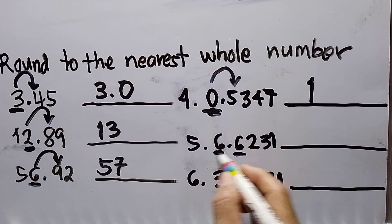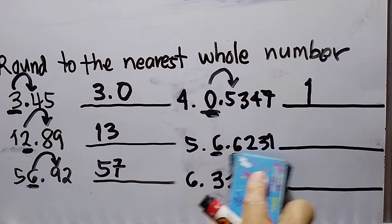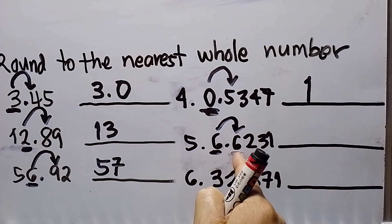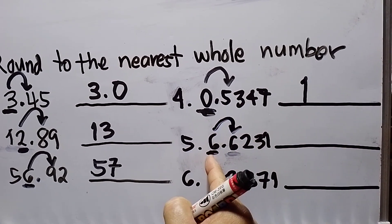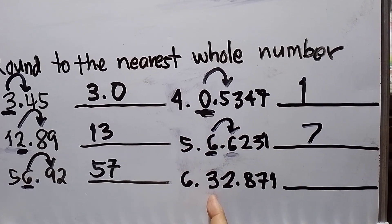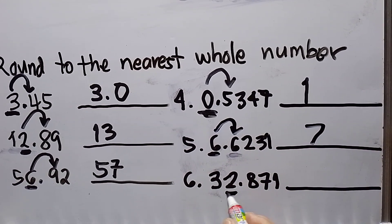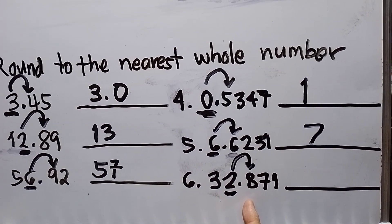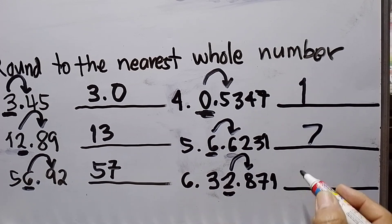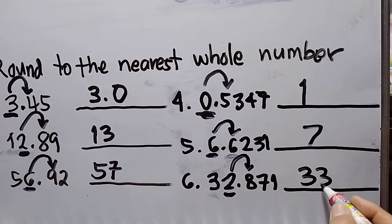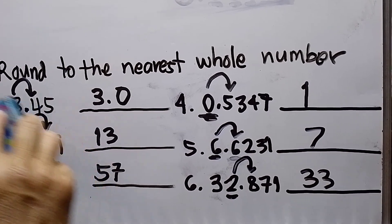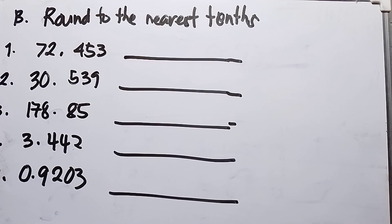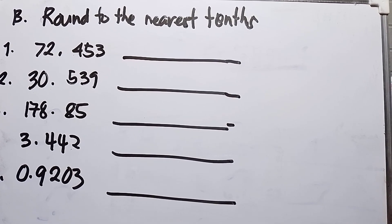Number five: I underline the ones place and make an arrow to the right. Since the digit is more than five, six plus one becomes seven. Number six: underline the ones place, arrow to the right. Since eight is more than five, we add one, so this becomes 33. That's all for letter A.